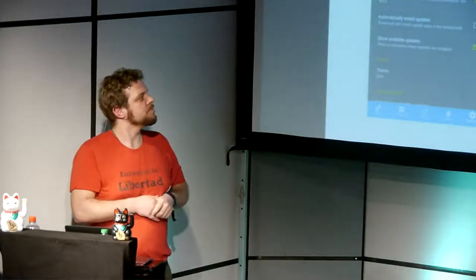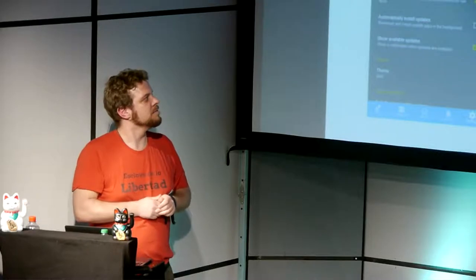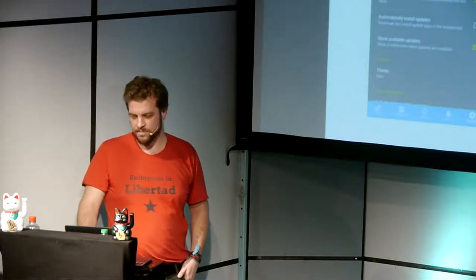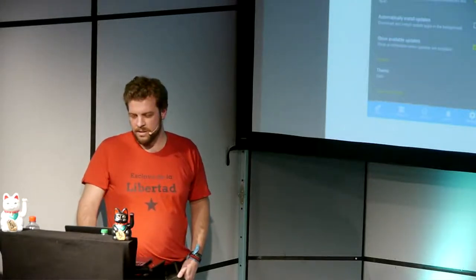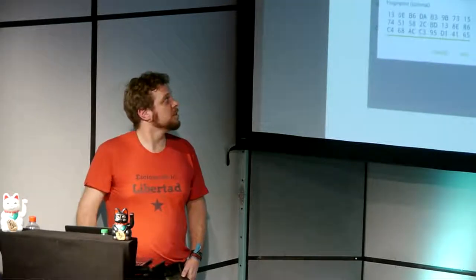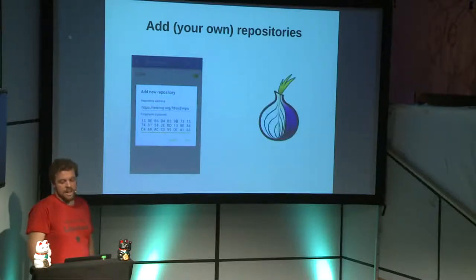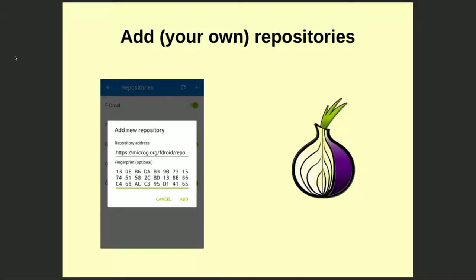Or if you are a developer with software in alpha, beta, or final version, you can set up your own repository and spread your software through it, even if you don't submit it to the official F-Droid repository. You can also put a repository on the onion web and F-Droid can connect to it — a very enhanced privacy and anonymity feature.